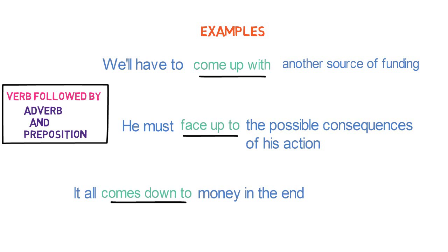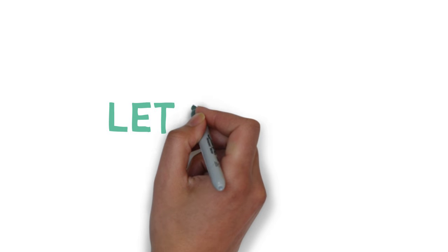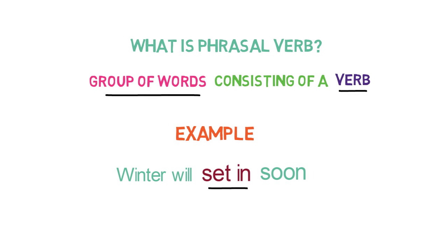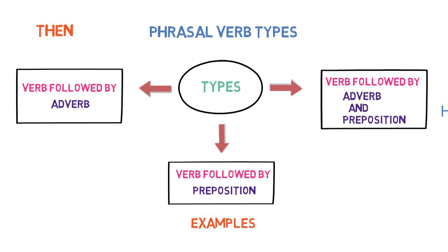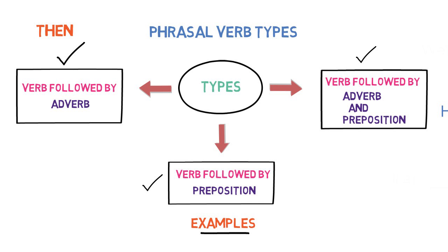So, that's all about phrasal verb. Let's quickly revise what we have learnt in this video. Firstly, we discussed what is a phrasal verb with an example — it is a group of words containing a verb. Then we defined three types of phrasal verb: the first is phrasal verb containing adverb, the second is phrasal verb containing preposition, and the third is phrasal verb containing adverb and preposition. And lastly, we saw examples of each of them to make things clear.